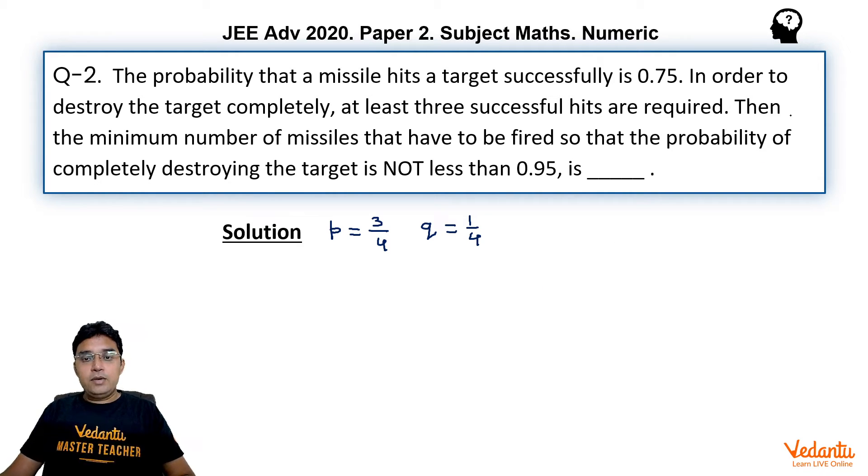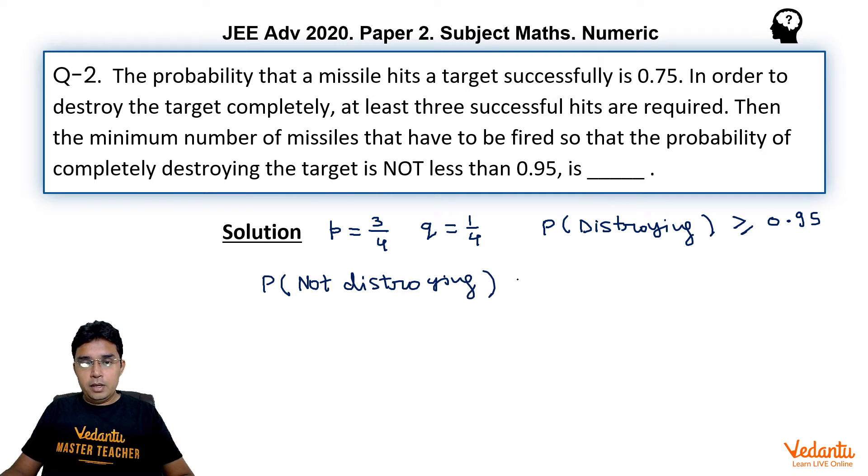Now, we are asked what is the minimum number of attempt so that this target is destroyed completely with probability not less than 0.95. That means we are looking for probability of destroying the target with greater than or equal to 0.95. So we can also say that the probability of not destroying should be less than 0.05. Now, if we are making n attempts, not destroying the target can happen in 3 different exclusive ways.